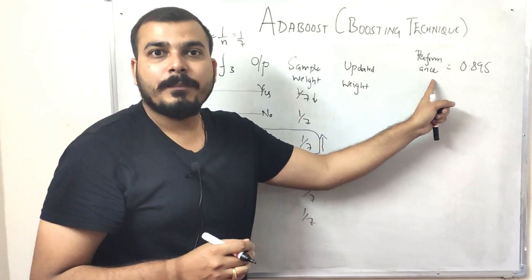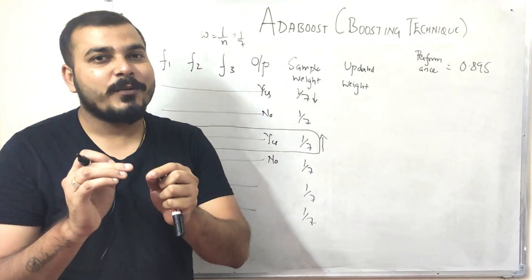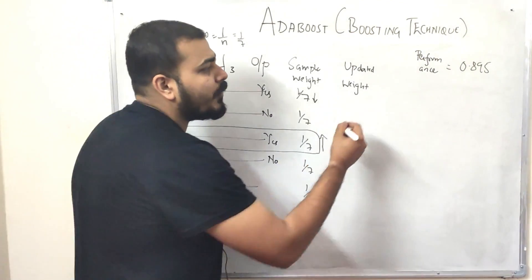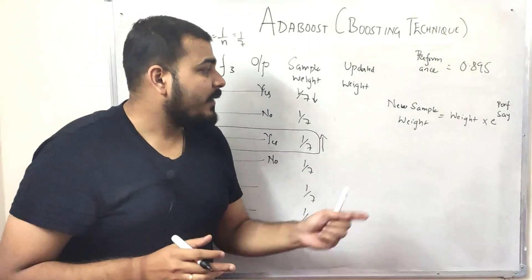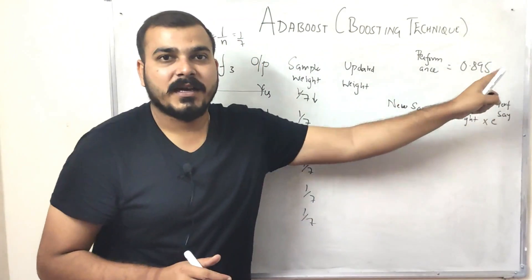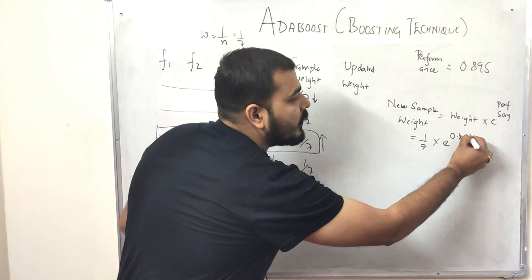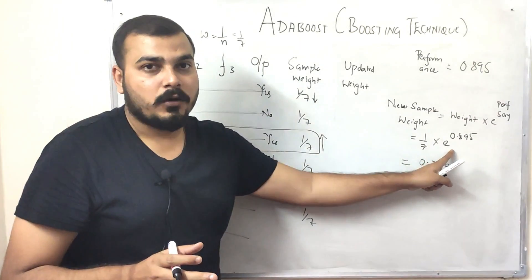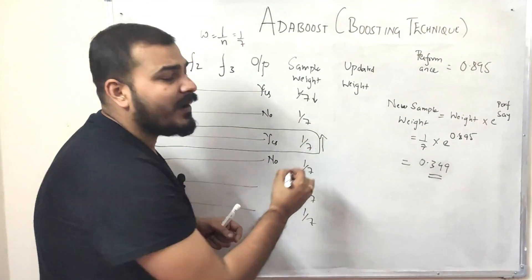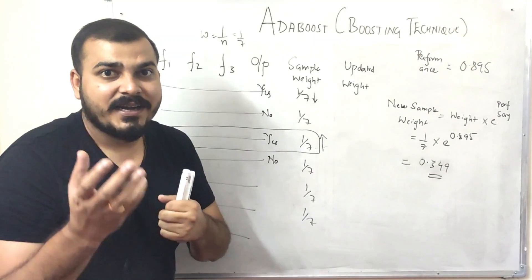In step 4, we update the weights. Our stump's performance is approximately 0.895. For the incorrectly classified records, the new sample weight formula is: new sample weight = old weight × e^(performance). So we compute (1/7) × e^0.895, which gives approximately 0.349. Initially the weight was 1/7, and now it has increased to 0.349.